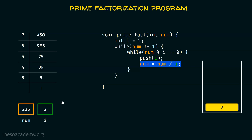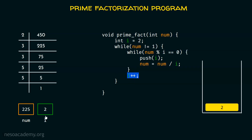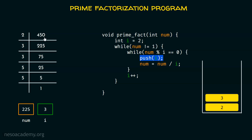The next step is to try to divide 225 by 2 again. Is 225 divisible by 2? No — num is not divisible by 2, so this condition is false and we exit the inner while loop. After exiting, we execute i++ to increment i. Next time we must divide by 3. We check: is num not equal to 1? Yes, so we continue. Is num mod i equal to 0? Yes — 225 is divisible by 3, so we push 3 onto the stack and update num to 75.